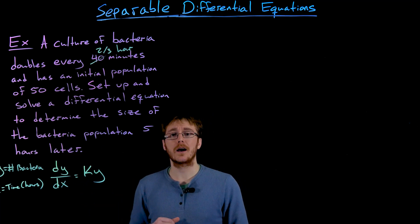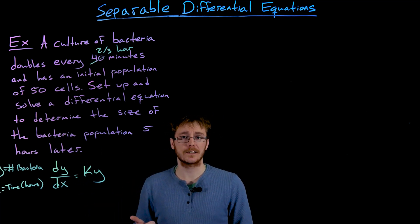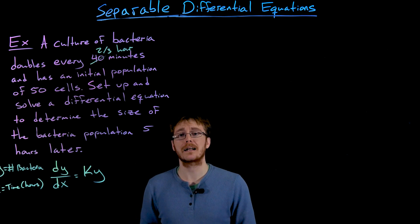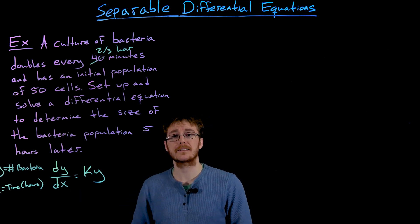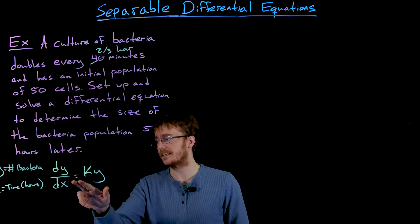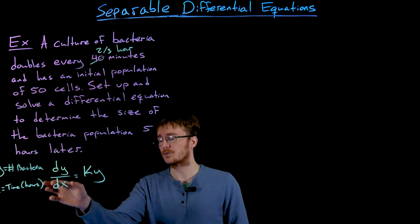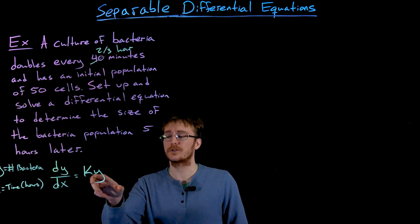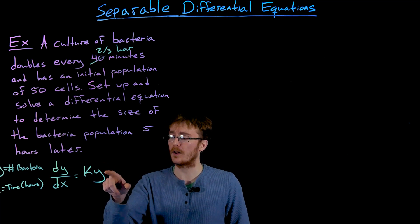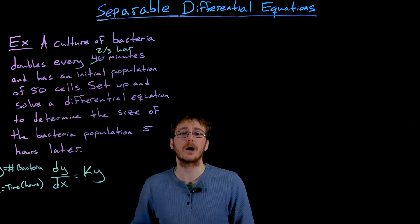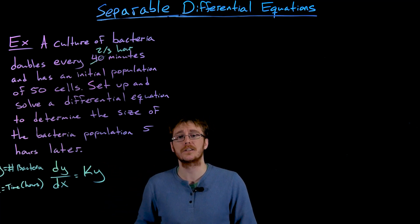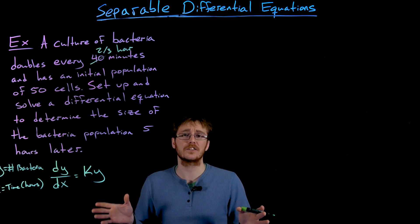So the left-hand side, dy over dx, is describing the instantaneous rate of change of the bacteria population with respect to time in hours. And what it is saying is that this rate of change of population is going to be proportional to, so that's some constant multiple of, y, which is the current population size. This makes sense because if we simplify the situation a bit and say every hour the population doubles,